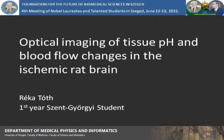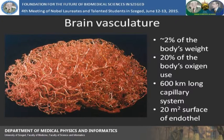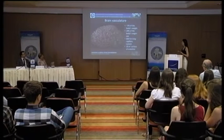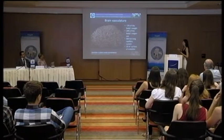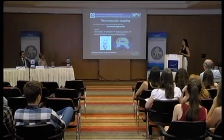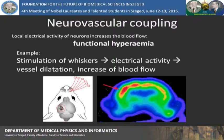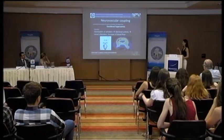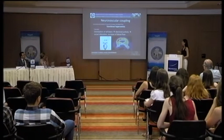Thank you for the introduction. As the center of the nervous system and the director of the body, the brain plays a crucial part, although it weighs only 2% of the body's whole weight. The incredible capillary system of the brain provides 600 kilometers of capillaries and 20 square meters of endothelial surface for constant nutrient exchange. Besides this basic perfusion, the electrical activity of the neurons causes dilation of the arteries and an increase in blood flow, called functional hyperemia. An example in rats is that stimulating the whiskers creates neuronal activity in a given brain region and causes functional hyperemia.